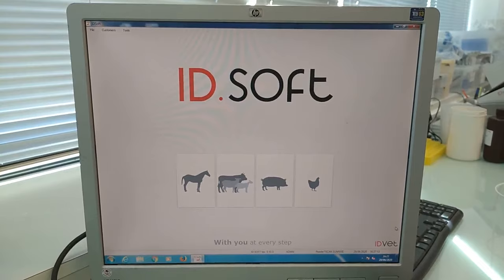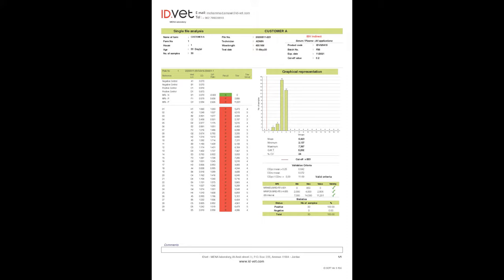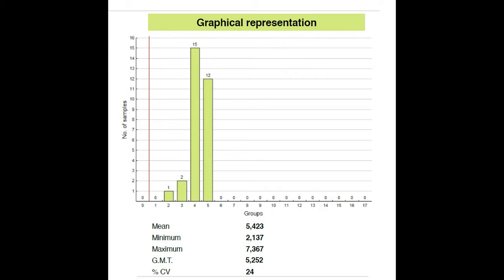In order to interpret your data, we advise you to use IDSoft. This software program can calculate many parameters as validation criteria, SP values, titers, vaccination age, groups, and offers a graphic representation of the serological profiles for an easier interpretation of your results.